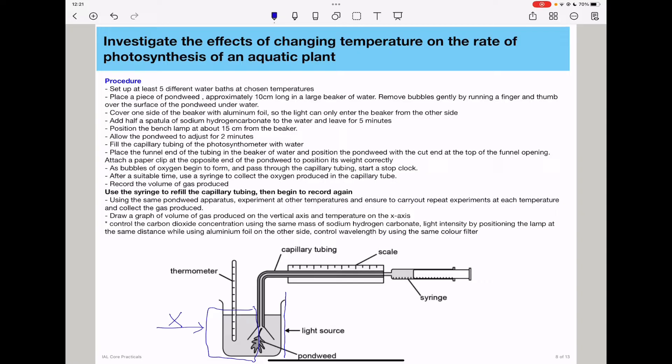You could choose the temperature in your preliminary experiment. You could choose maybe 10 degrees, 15 degrees, 20 degrees, and so on. At least you need to have five different experiments set up.